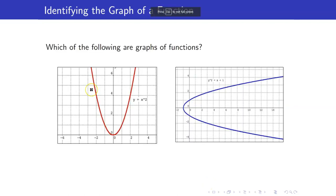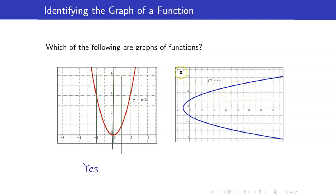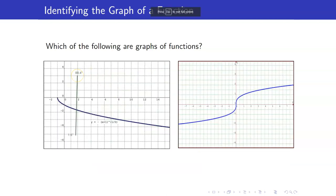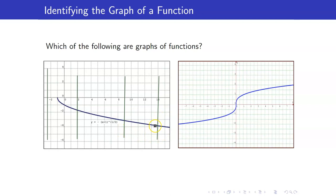Let us look at some examples. For the first graph, wherever I draw my vertical line, it will always intersect the graph at exactly one point — so this graph represents a function. For the second one, if I draw a vertical line here, it intersects the graph at two points, so the answer is no — this is not a function; it fails the vertical line test. For the third one, drawing vertical lines shows they always intersect the graph at exactly one point. If a vertical line does not intersect the graph at all, that's okay. But when it does, it intersects at exactly one point — hence this is a function.